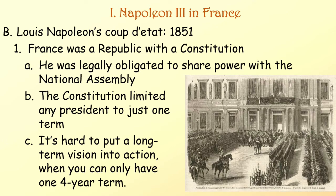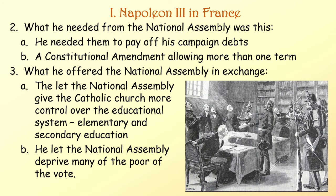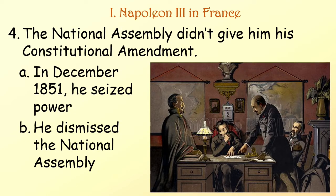Louis-Napoleon's coup d'état came in 1851. France was a republic with a constitution, and Louis-Napoleon was legally obligated to share power with the National Assembly. The constitution limited any president to just one term — hard to put a long-term vision into action with only one four-year term. He needed the National Assembly to pay off his campaign debts and pass a constitutional amendment allowing more than one term. In exchange, he offered them more Catholic Church control over elementary and secondary education, and the ability to deprive many of the poor of the vote. The National Assembly refused the amendment, so in December 1851, Louis-Napoleon seized power and dismissed the National Assembly.